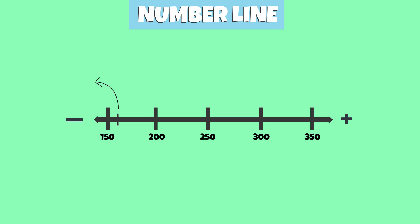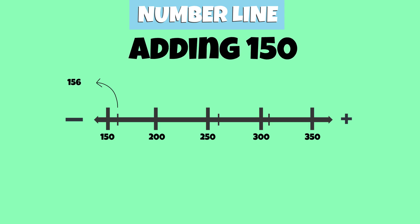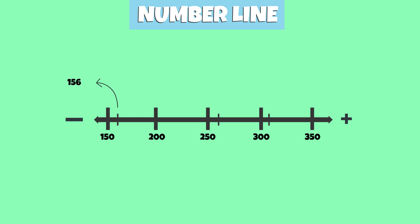If we look at our number line, we're starting at the number 156. Since we're adding 150, this means we need to move 150 units to the right. We can move 100 units to the right, as represented by the arrow.